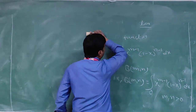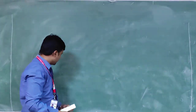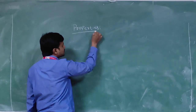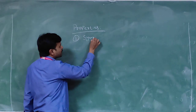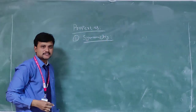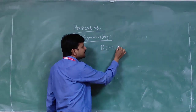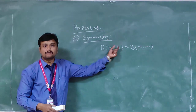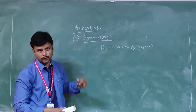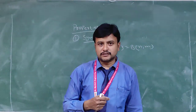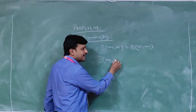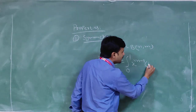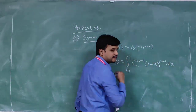Now let us discuss the properties of beta function. We have some properties of beta function. The first property is the symmetry property. The symmetry property states that B(m, n) is equal to B(n, m). Now let us derive this symmetry property. By the definition of the beta function, B(m, n) = ∫₀¹ x^(m−1) (1−x)^(n−1) dx.